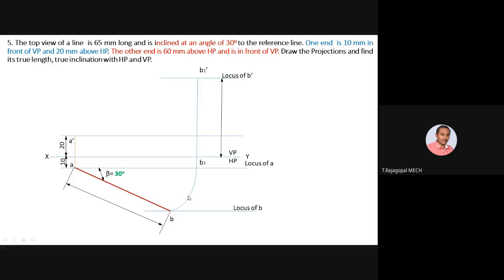Extend the projector to cut locus of B-dash and mark the corresponding point as B1-dash. A as center, B rotated to B1, now join A-dash and B1-dash in the front view — that line is the true length in the front view. This completes the true length of the front view.